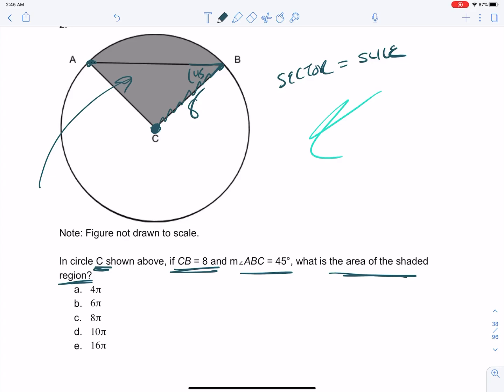So the sector is part of the area, so all we have to do here is figure out the area as a whole, which would be pi radius squared, 8 squared, that's 64 pi, that would be the whole area. We just need to know what portion of the circle we're dealing with.